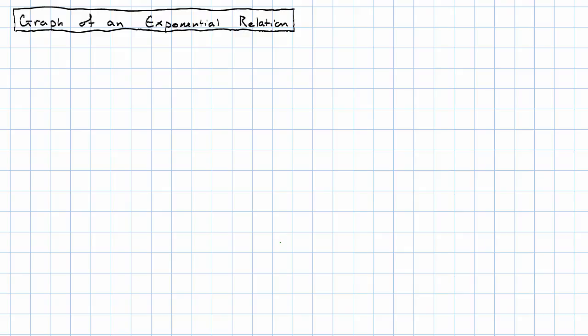What would the graph of an exponential equation look like? Suppose we want to graph this equation, y equals 3 times 2 to the x.